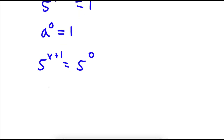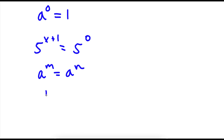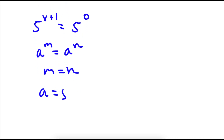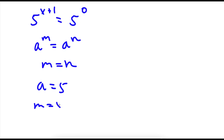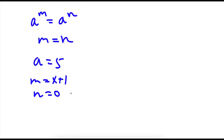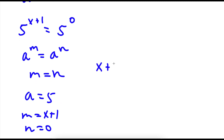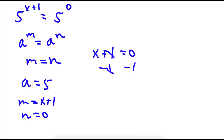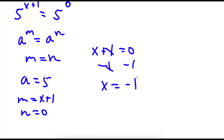So I can rewrite 1 as 5 to the power of 0. Now if I have something in the form a to the power of m is equal to a to the power of n, then m is equal to n. So in this case, a is 5, m is x plus 1, and n is 0. So this means that x plus 1 is equal to 0. All I have to do is subtract 1 on both sides, and I get x is equal to negative 1. So this is my answer.